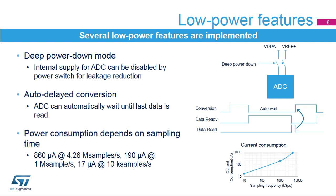Auto-delayed mode makes the ADC wait until the last conversion data is read before starting the next conversion. This avoids unnecessary conversions and thus reduces power consumption. The power consumption is a function of the sampling frequency.